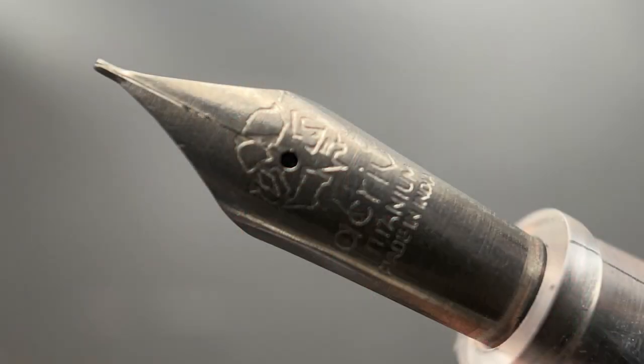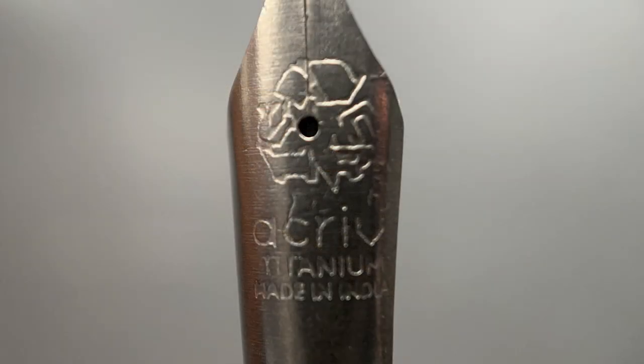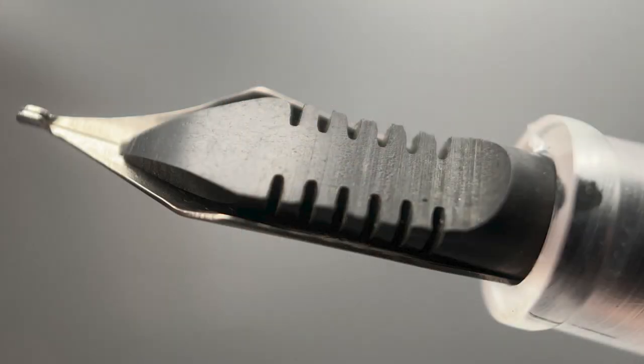The cap twists off and underneath we have a number six size titanium nib. The nib is available in fine, medium, broad, as well as 1.1 and 1.4 stubs. The company states that since this nib is made from titanium, which is non-corrosive, that mixing inks from different manufacturers will not cause any long-term issues with the nib. And here's a look at the ebonite feed.